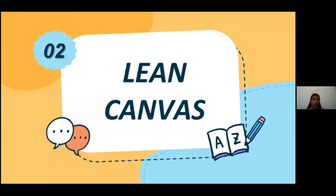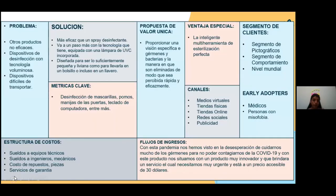Este es el segundo segmento: el Lean Canvas, en el cual se obtienen nueve bloques. El primero es el Problema: los productos no son eficaces, la desinfección con tecnología es difícil, y hay dificultad de transportar el producto. En la parte de Solución: es más rápido que un spray desinfectante. Este equipo es una lámpara UVC incorporada, de diseño muy liviano, súper sencillo y pequeño, como para llevarlo en un bolso, una cartera o una mochila.